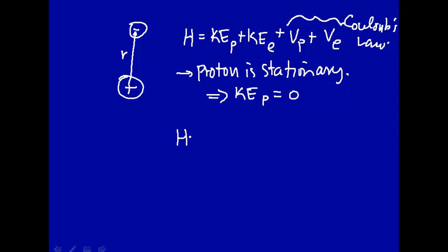So with those assumptions, the Hamiltonian will be equal to the kinetic energy of the electron plus the potential energy of the proton-electron pair.